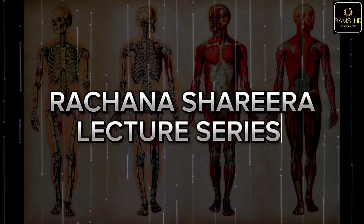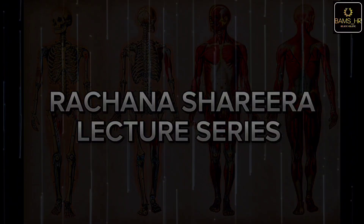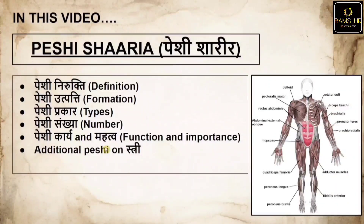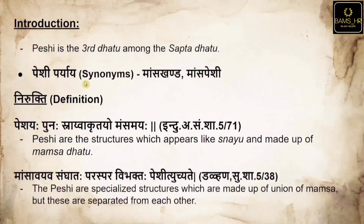Welcome to the Rajana Sharira lecture series. In this video we are going to study about Peshi Sharira. This video includes the topics of Peshi: Peshi Nirukti (definition), Peshi Utpati (formation), Peshi Prakara (types), Peshi Sankhya (number of Peshis in the body), Peshi Karya and Mahatwa (function and importance), and the additional Peshi present in females.